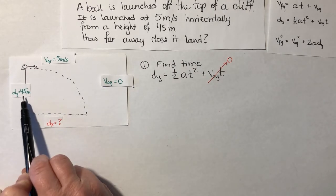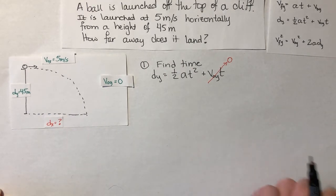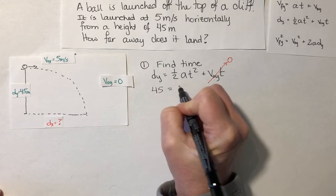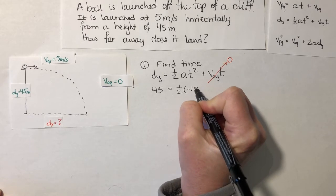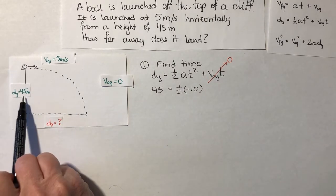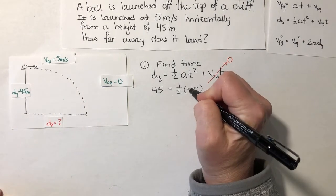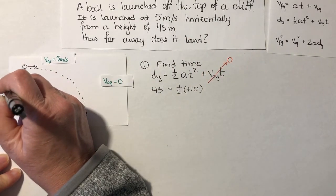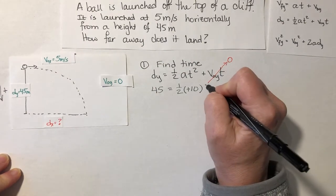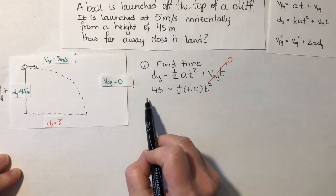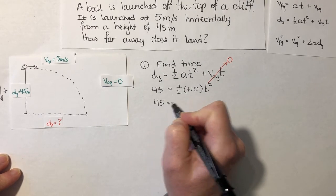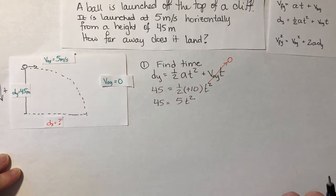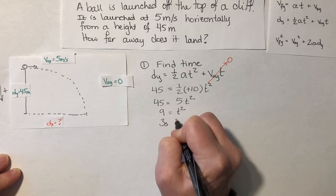So dy is something I know. Acceleration is something I know. I just don't know time. So 45 meters equals one half times minus 10. Well, you know what? Since the ball is just falling downward, we can say that downward is the positive direction for this drawing. 45. And that way I don't have to worry about minus at all in there. Times time squared. 45 equals 5t squared. So if I were to divide both sides by 5, I end up with 9 equals t squared. So 3 seconds equals t.